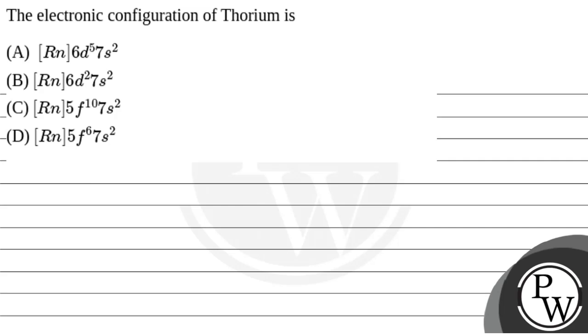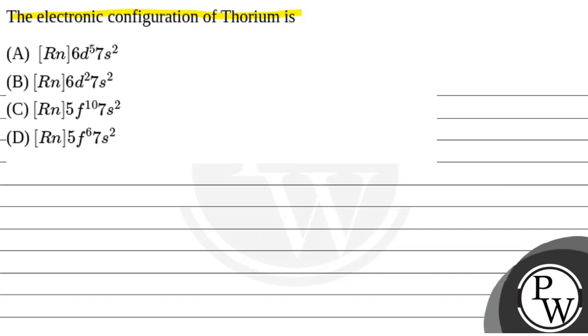Hello, let's read this question. This question says the electronic configuration of thorium is, and here four options are given. Option A: Radon 6d⁵7s². Option B: Radon 6d²7s². Option C: Radon 5f¹⁰7s². And Option D: Radon 5f⁶7s².